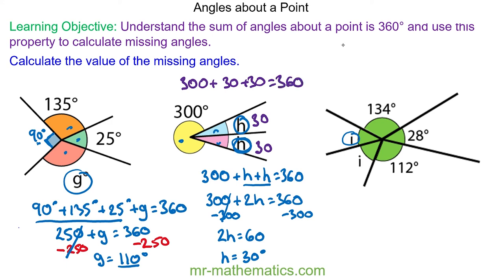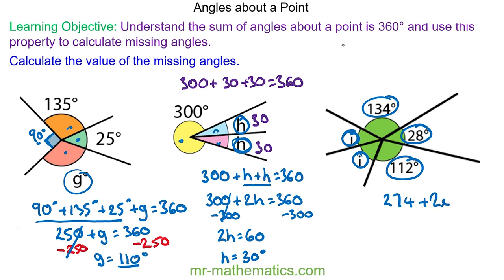Okay, let's try our last question. We have 134 plus 28 plus 112, which makes 274, plus the two i's. These are angles about a point and add up to make 360.